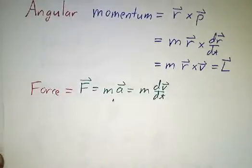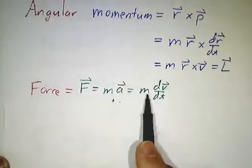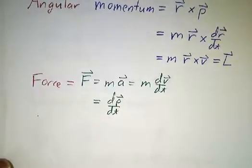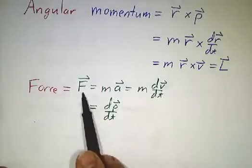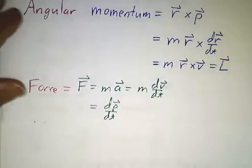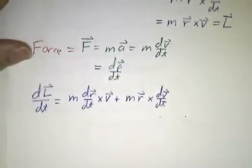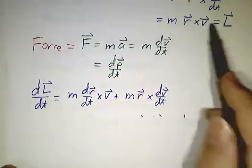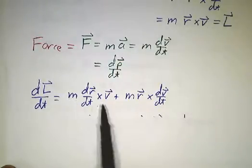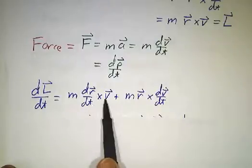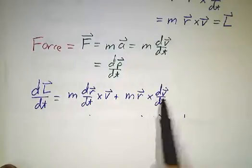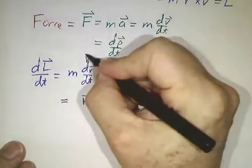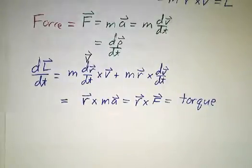We also have force: force is mass times acceleration, which is mass times the derivative of velocity. That's the derivative of momentum, so the way you change something's momentum is to apply a force to it. Let's figure out what the derivative of angular momentum is. Angular momentum is r cross v times m, and m is a constant. Using the product rule, we get two terms: dr/dt cross v, plus r cross dv/dt.